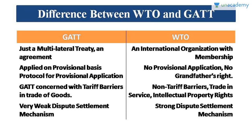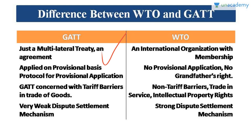Finally, we need to know the major differences between GATT and WTO. GATT was just a multilateral treaty — an agreement — while WTO is an organization with membership. GATT was provisionally applied, with the Protocol for Provisional Application and grandfather's rights, but in WTO there is no such provision. WTO must be applied completely. GATT was limited to tariff barriers and trade in goods, while WTO includes non-tariff barriers, trade in services, and intellectual property rights.